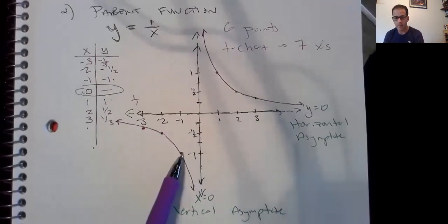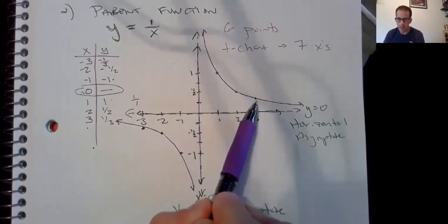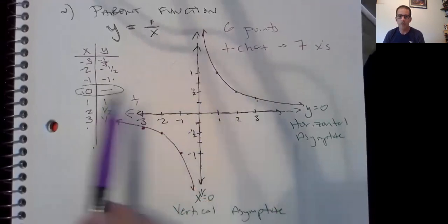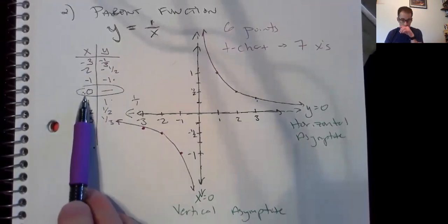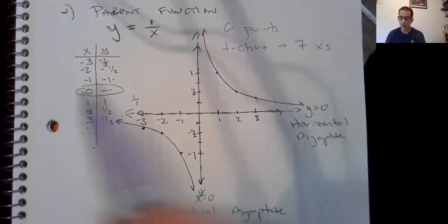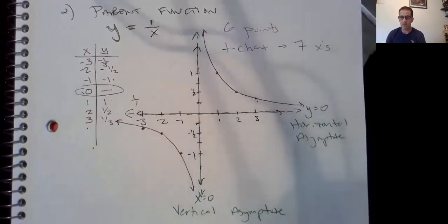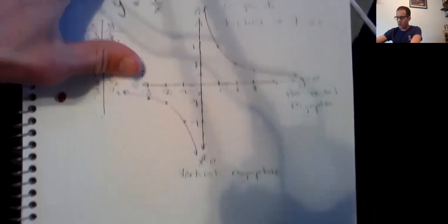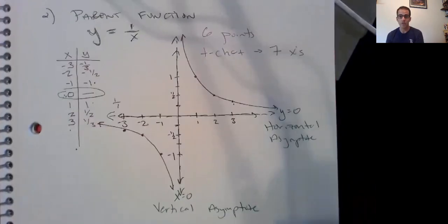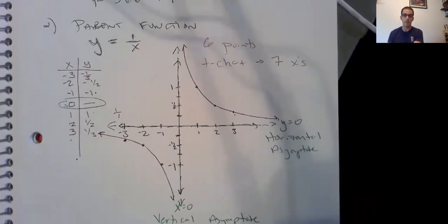And here is our parent function with six points, three on the bottom left, quadrant three, three on the top right, quadrant one, seven things in our t-chart because we have our vertical asymptote in the middle. And that's our parent function for inverse variation, a rational function. All right, but obviously we're going to use different numbers. So I'm gonna have to turn the page. So you can pause here if you need to copy down more of this.